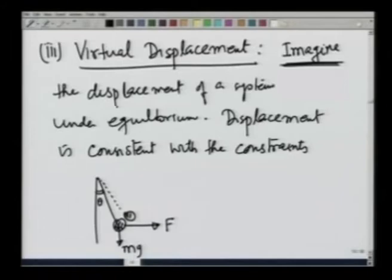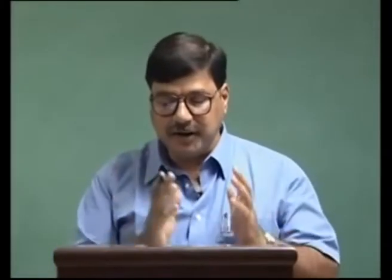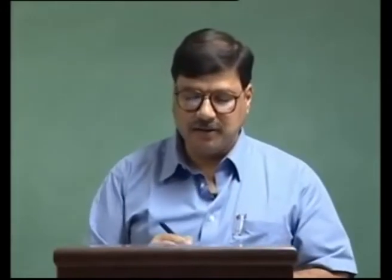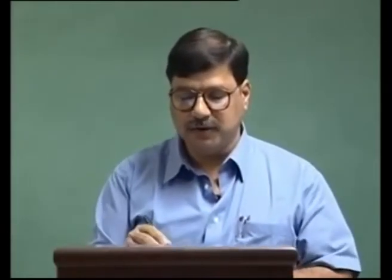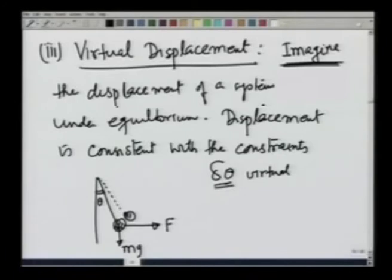This displacement is consistent with the constraint, but it is actually not moving — I am imagining as if it has moved. This is known as virtual displacement. It is usually given by the symbol delta. So, delta theta is the virtual movement or displacement.